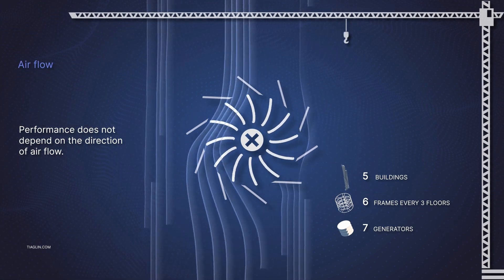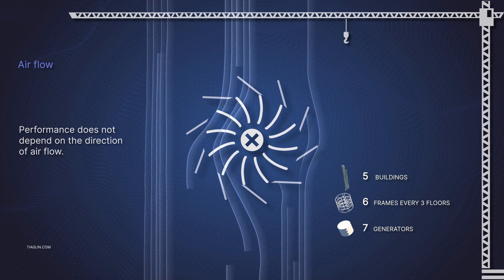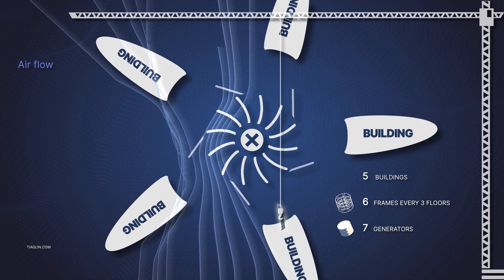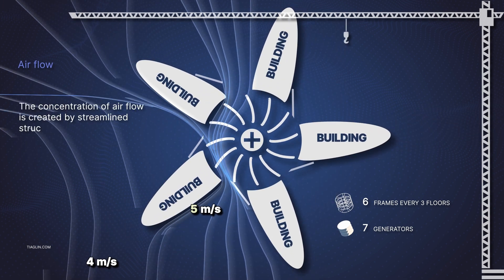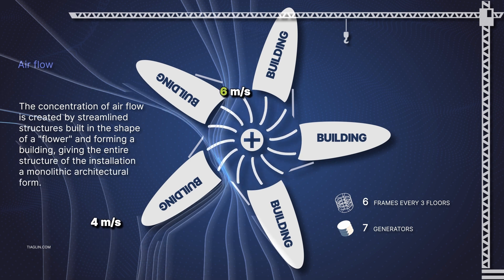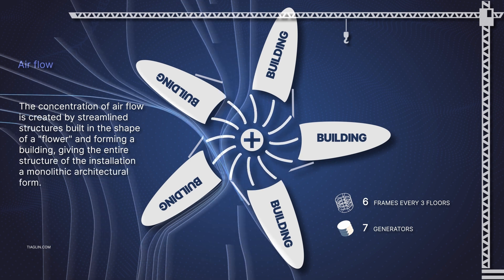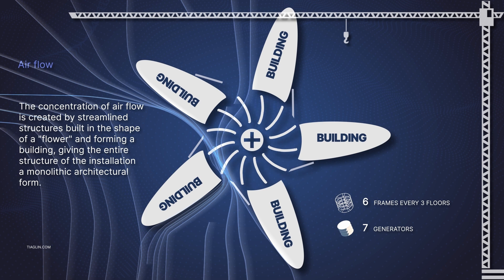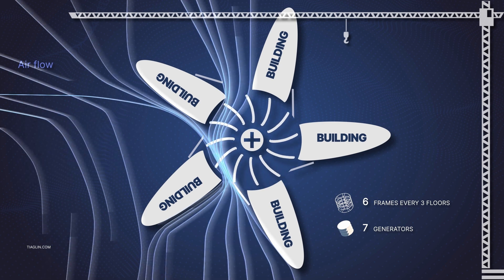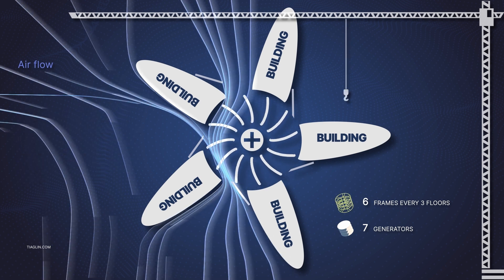Performance does not depend on the direction of airflow. The concentration of airflow is created by streamlined structures lined in the shape of a flower, which form a building, giving the whole structure of the installation a monolithic architectural form.